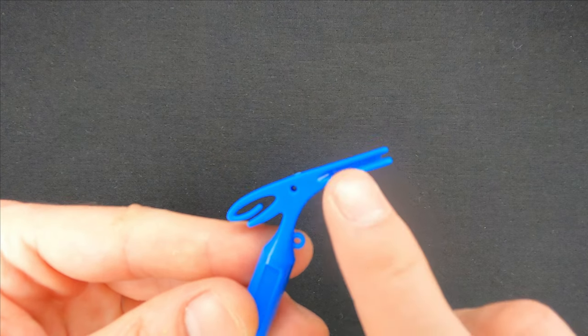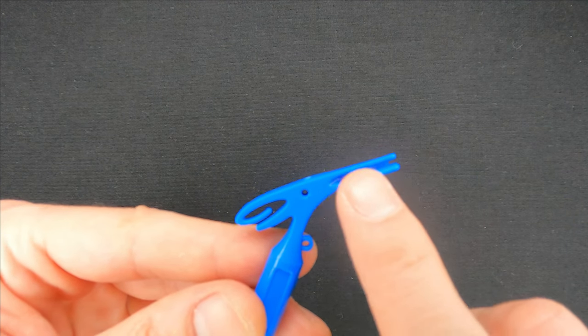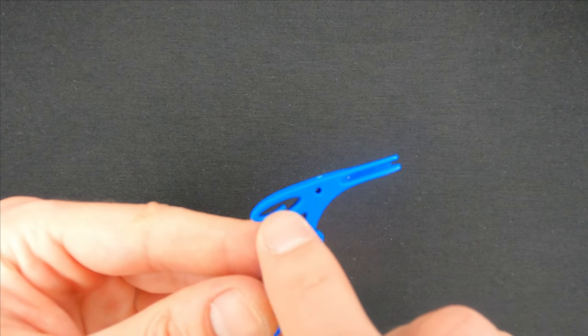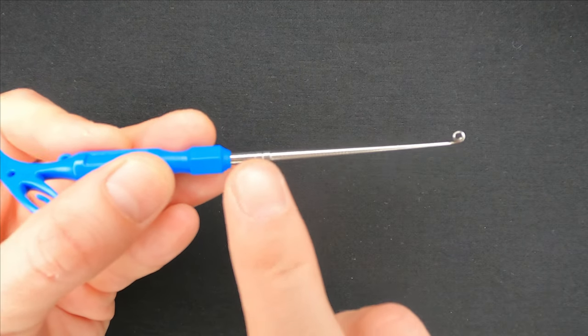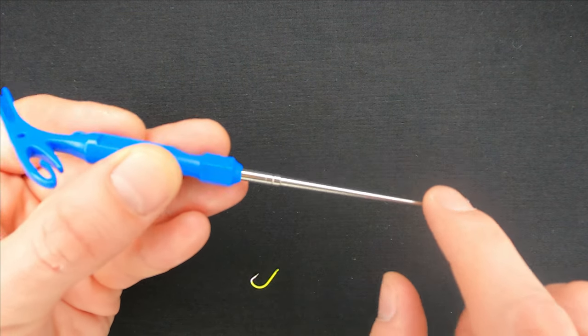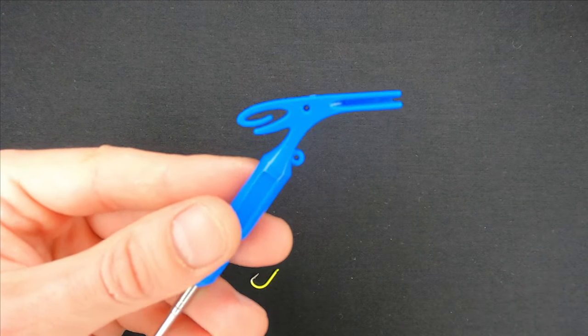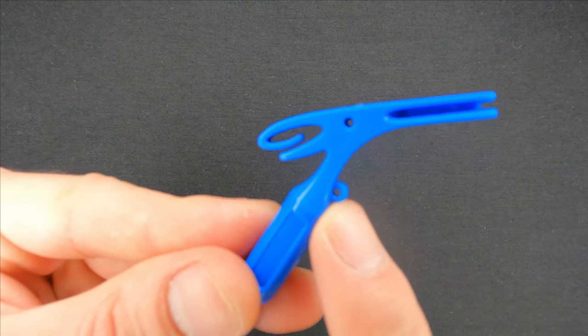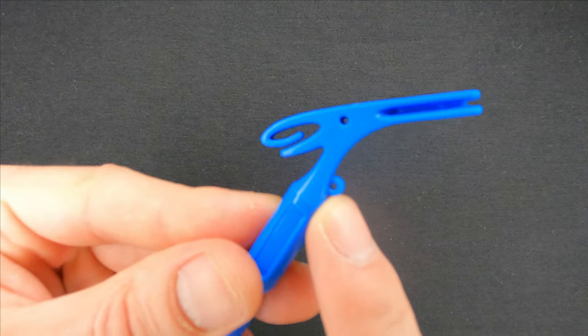It has a quick knot tool at the front, loop tyer at the back, and a hook remover which is made from stainless steel. Also, as you can see, it has a hanging hole for the ring over here.